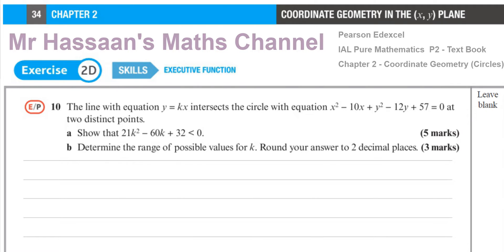This is all about something we covered in P1 — where a straight line and a non-linear graph intersect. The line y = kx intersects the circle x² - 10x + y² - 12y + 57 = 0 at two distinct points. We must show that 21k² - 60k + 32 < 0, then determine the range of possible values of k, rounded to two decimal places.